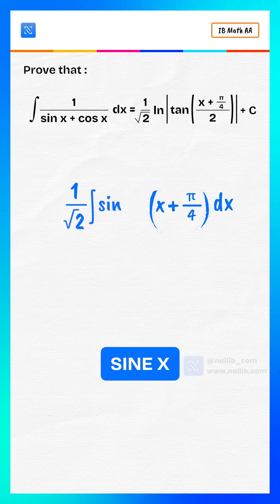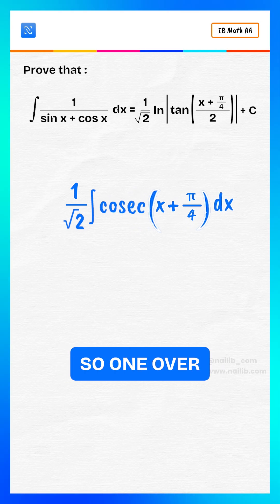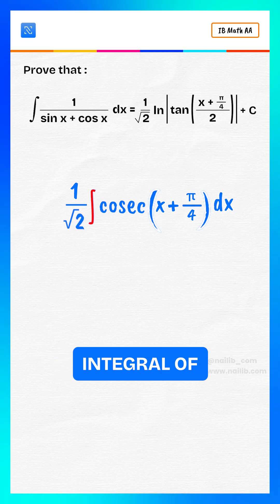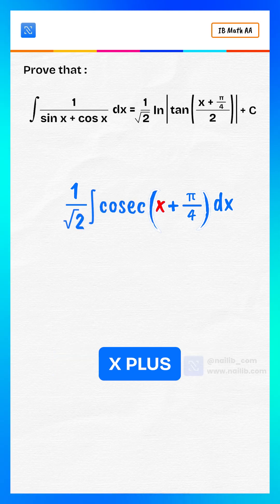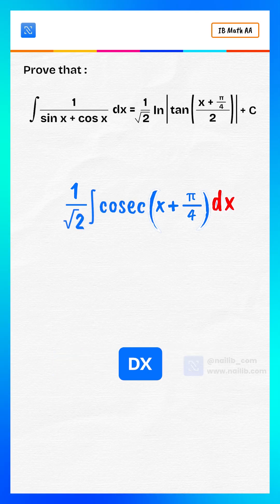1 over sine x is cosecant of x. So, 1 over root 2 times the integral of cosecant of x plus pi over 4 dx.